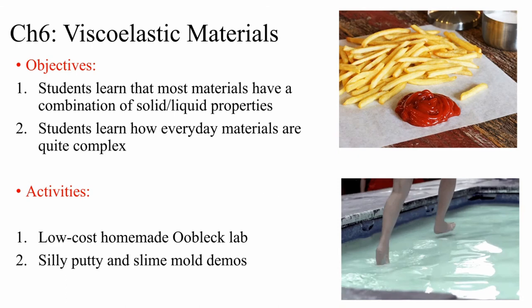In Chapter 7, students learn about surface tension and how it is important for making soap bubbles. Students also learn how surface tension is important for life — such as why plants are able to uptake nutrients due to surface tension and do work against gravity. Students do a lab on making huge soap bubbles using special polymers, and they learn how recent advances in polymer physics can tell us about how to make huge, stable soap bubbles.